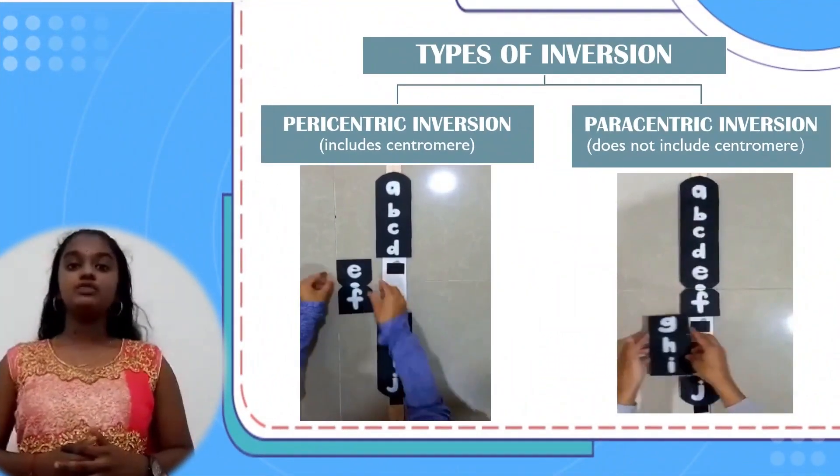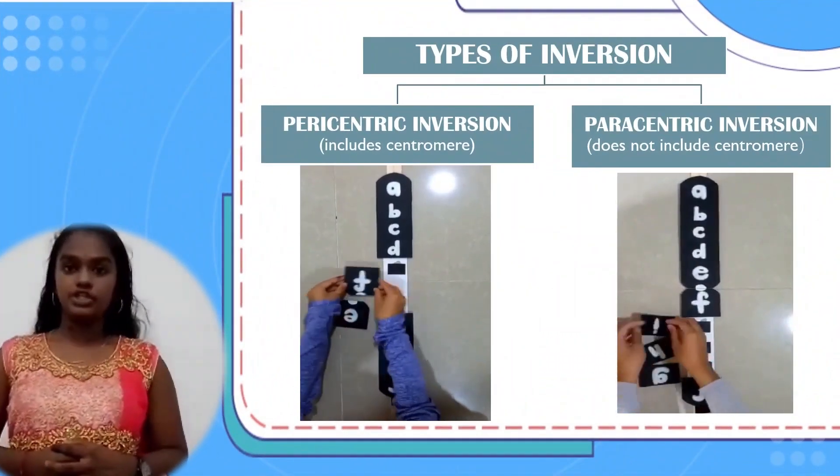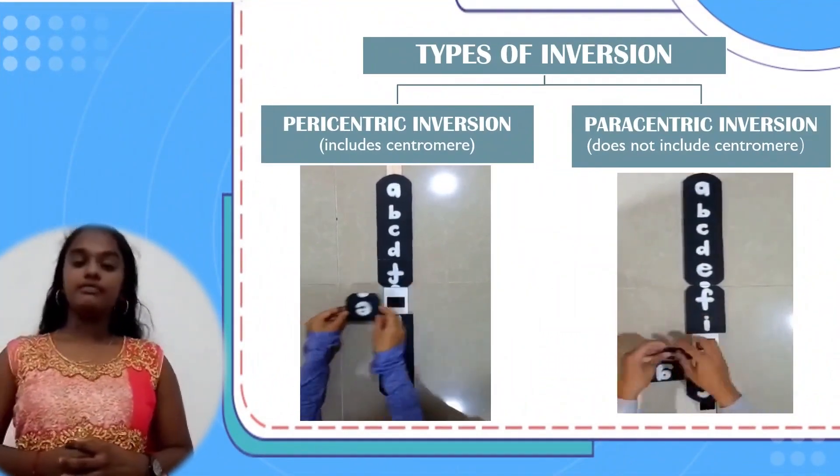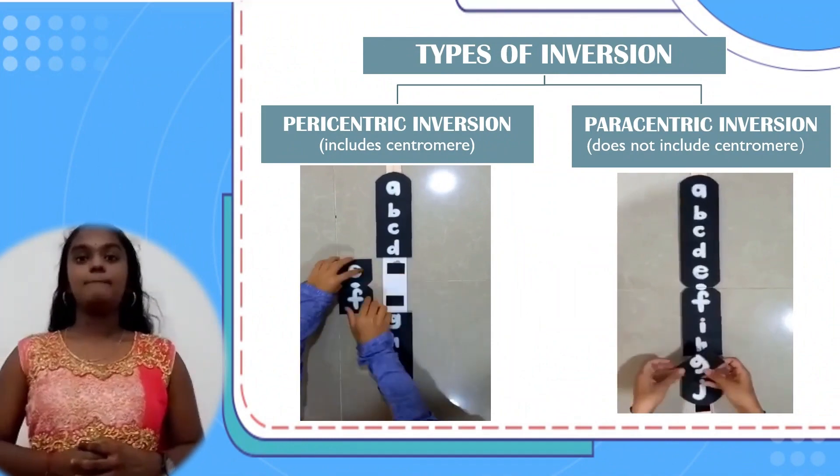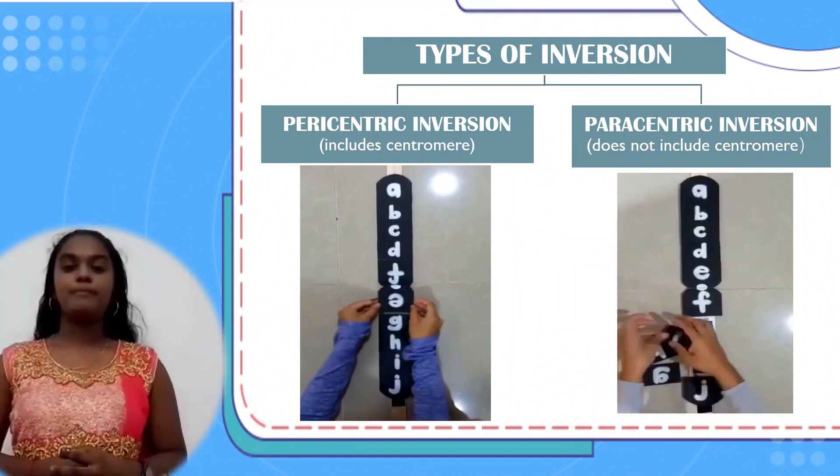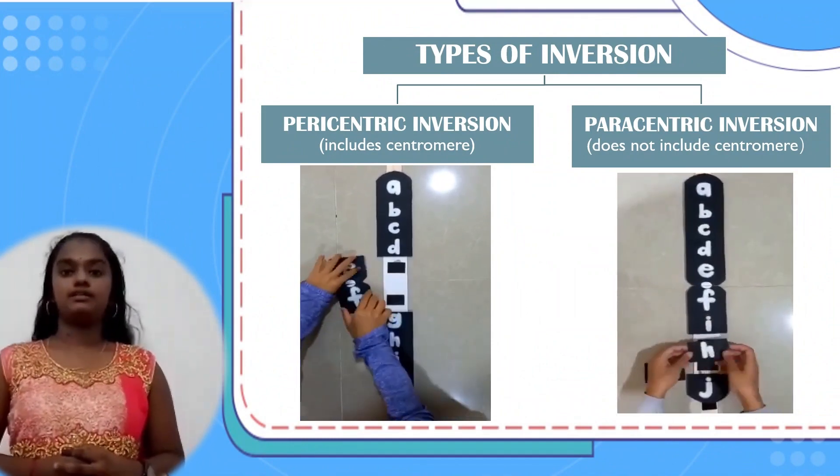There are two types of inversion. The first one is paracentric and the second one is pericentric.